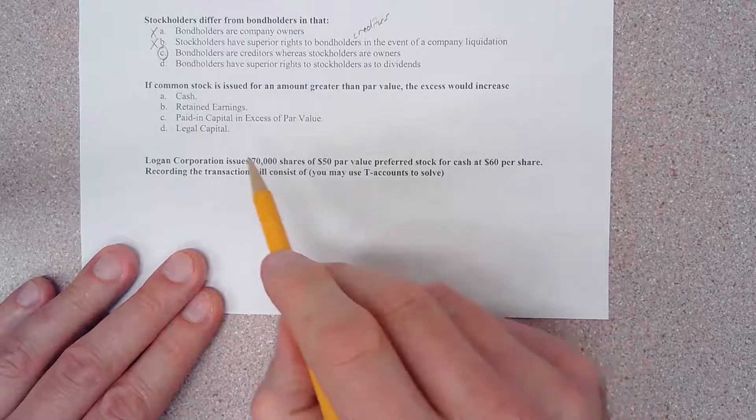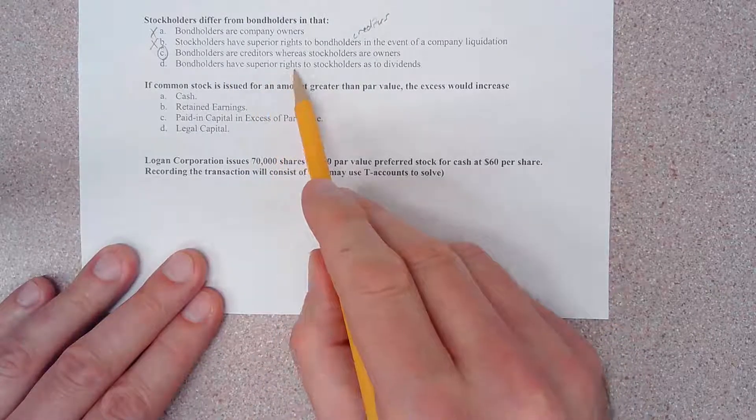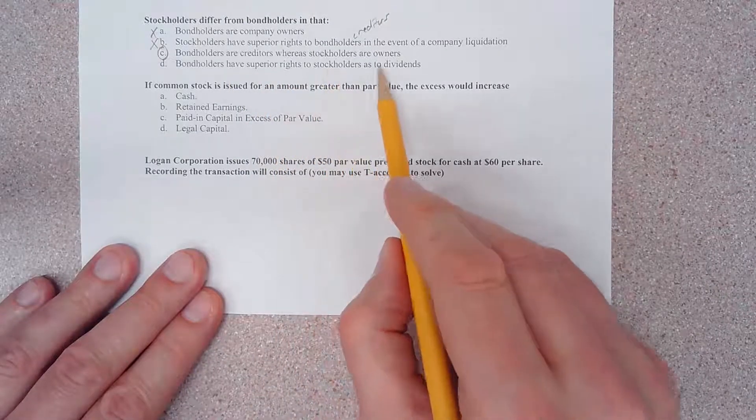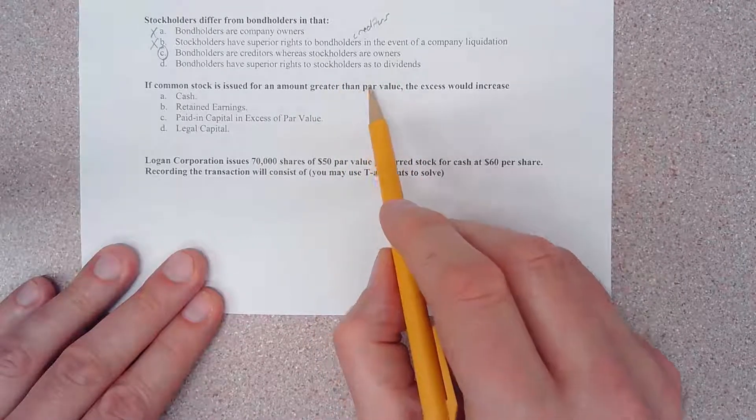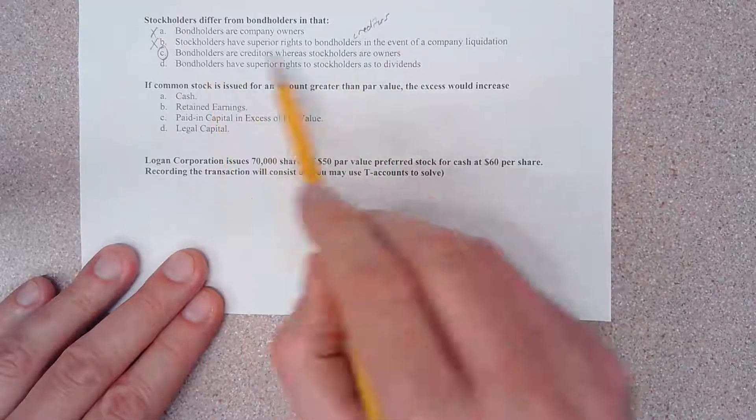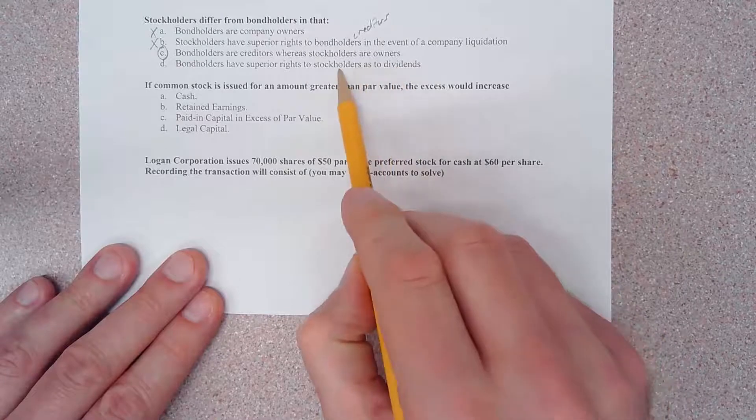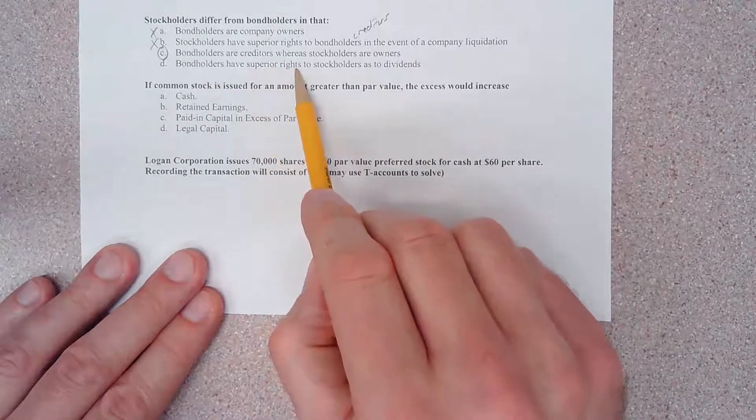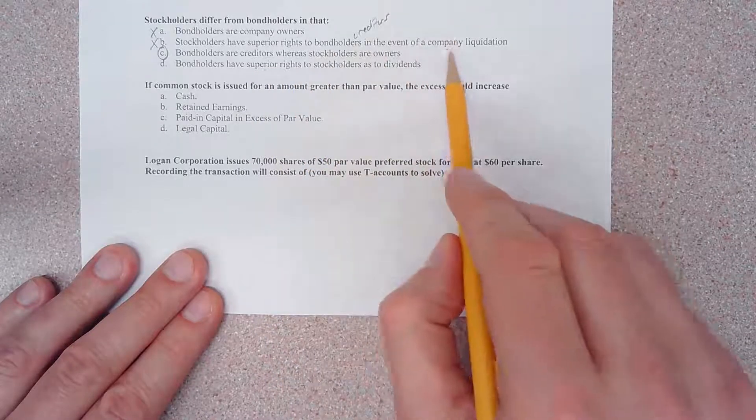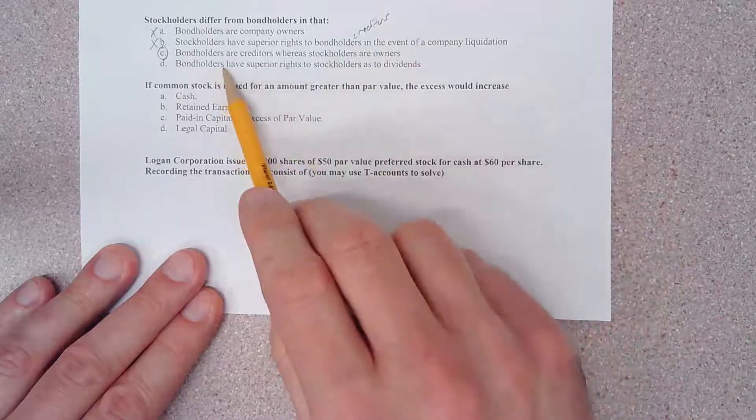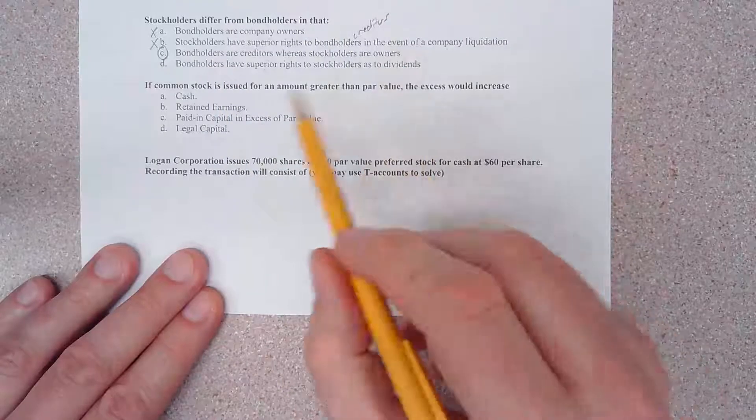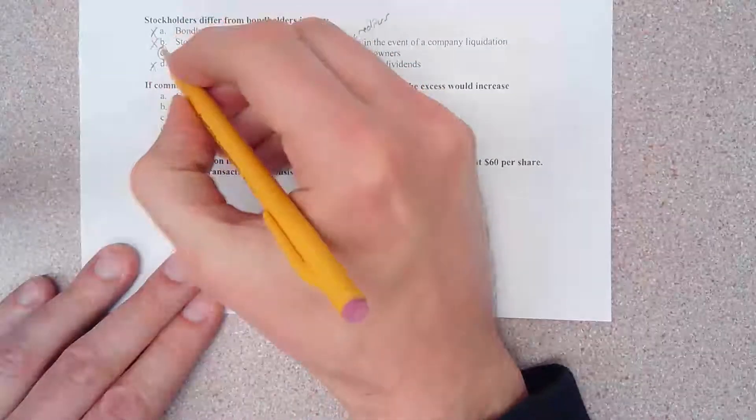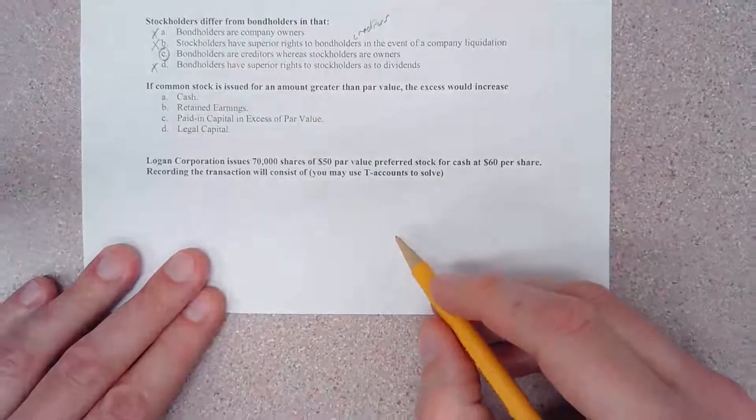Let's look at D and find out why it's wrong. It says bondholders have superior rights to stockholders as to dividends. The reason this is wrong is because bondholders do not get dividends. Only stockholders can get dividends. Bondholders never receive dividends, so this is incorrect. Again, C is our correct answer.